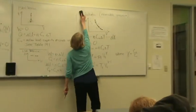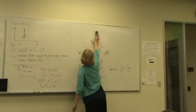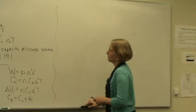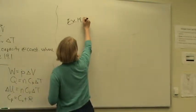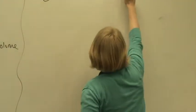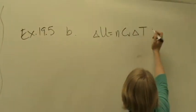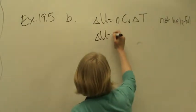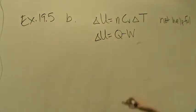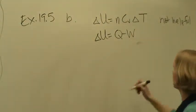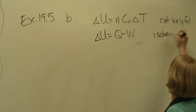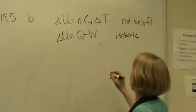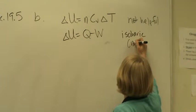Okay so part B delta U and CV delta T is not helpful. But we do know that delta U is equal to Q minus W for any process. And we have an isobaric case. So unfortunately none of those equals zero. But we just calculated work from part A. So that part's not helpful either.